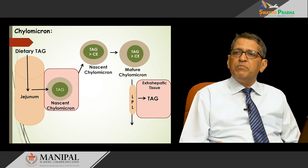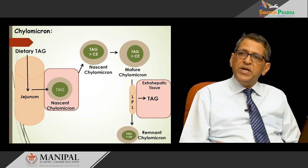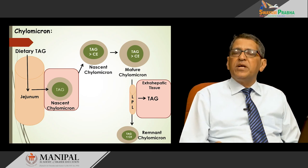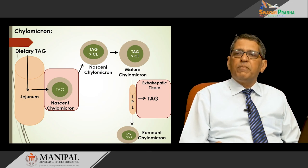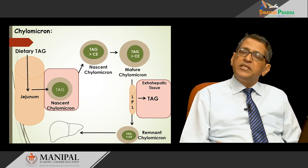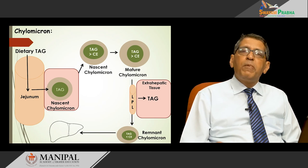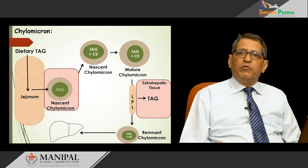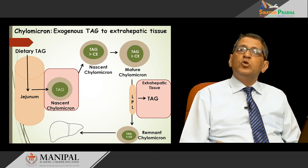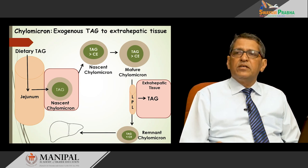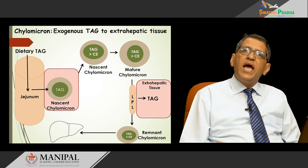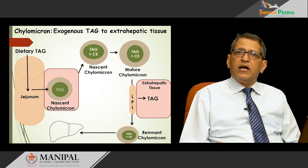The mature chylomicron is eventually converted to a remnant chylomicron, which is smaller in size and has much lower triacylglycerol concentration. The remnant chylomicron is taken up by the liver for further metabolism. The function of chylomicron is to transport dietary triacylglycerol — exogenous triacylglycerol — to extrahepatic tissues.